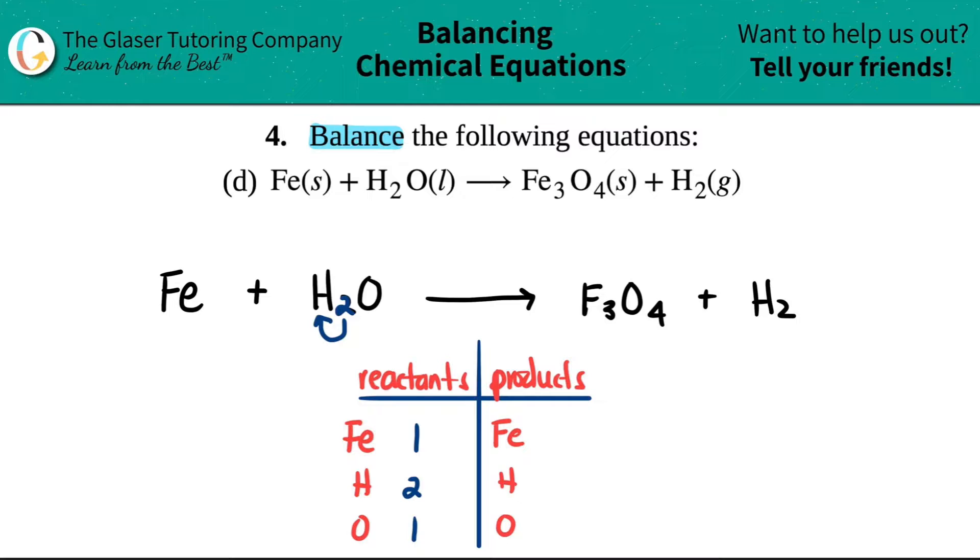Coming on to the right side, the product side, looks like I have three irons. And it should be Fe. So this is three Fe. So yeah, three irons. Four oxygens. So I'm going to skip down. I'm going to put it down over here. And then two hydrogens. So looking at it, looks like my irons need to be balanced and my hydrogens need to be balanced.